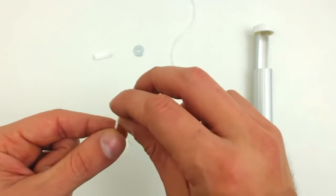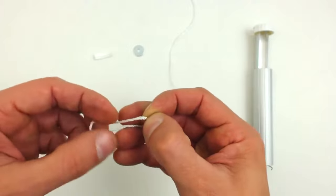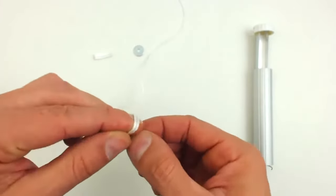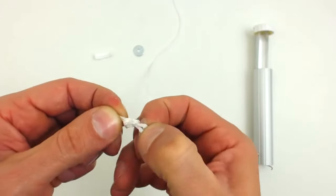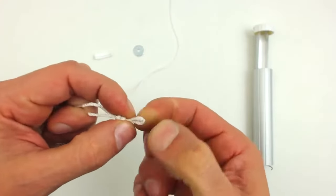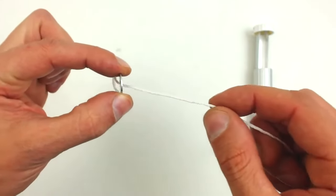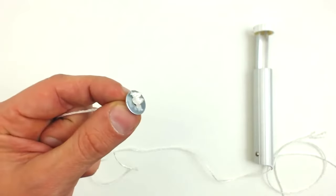The next step is to make a double knot in a thin rope. Then we pass it through a washer, we cut whatever is left, and put it with silicone.